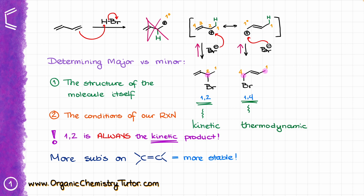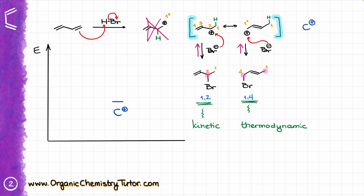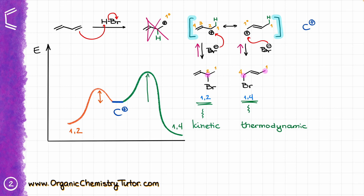Let's analyze this from a kinetics and thermodynamics perspective. Our carbocation intermediate — abbreviated as C⁺ — can make either the 1,2-product or the 1,4-product. We know the 1,2 forms fast. On an energy diagram, the carbocation intermediate sits in the middle. The activation energy for forming the 1,2-product is relatively low — a small hump. Forming the 1,4-product requires more energy, so the activation energy is higher and the process is slower. However, from an energy perspective, the 1,2-product is not as stable as the 1,4-product. The 1,4 thermodynamic product is lower in energy and therefore more thermodynamically stable.